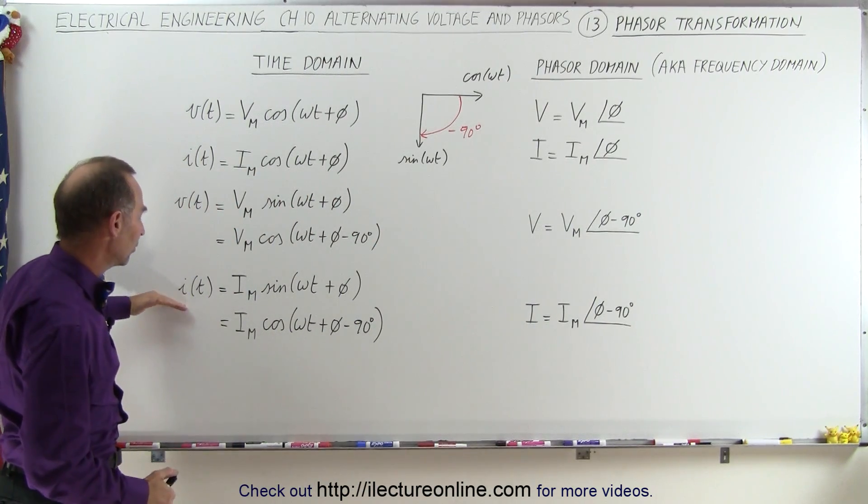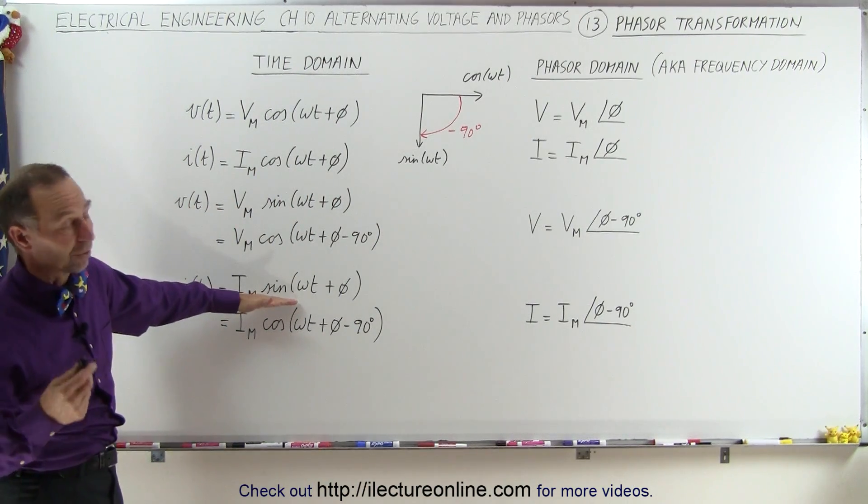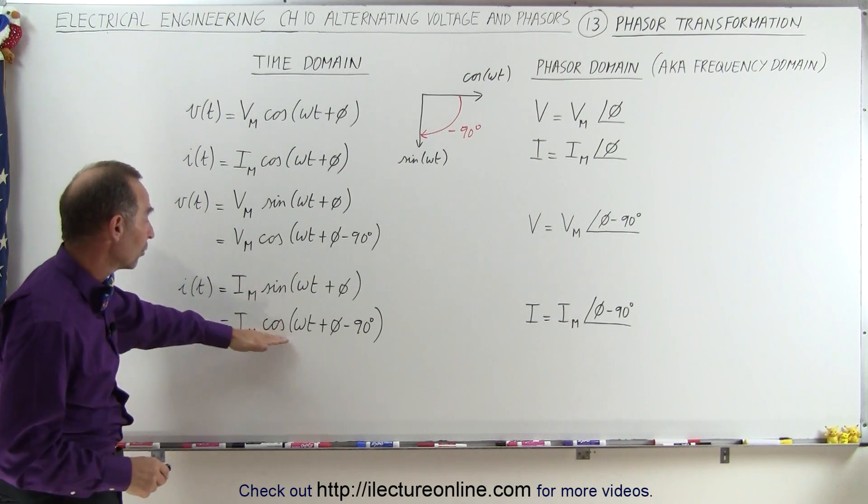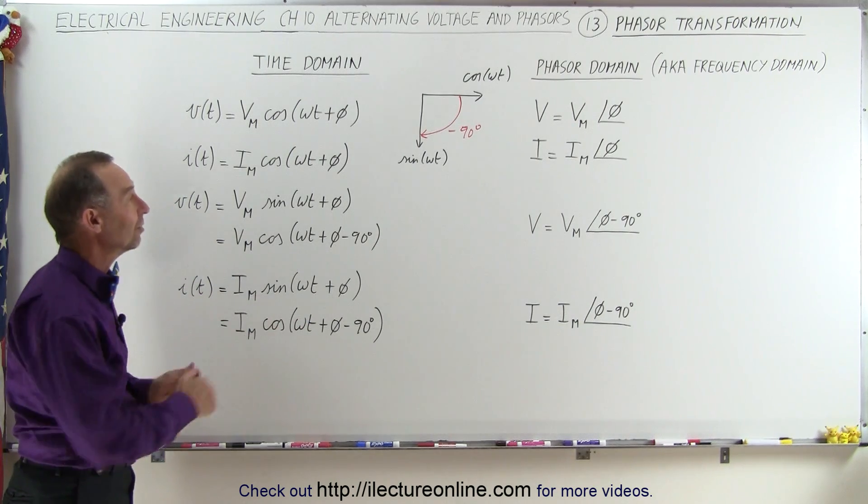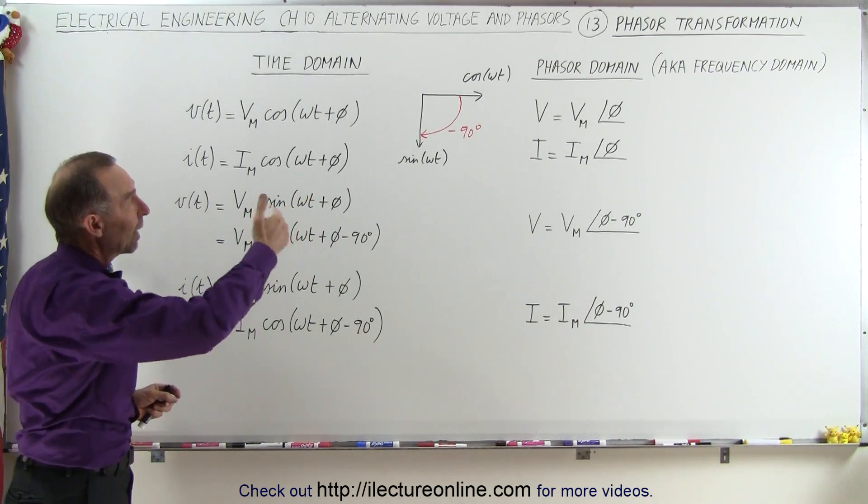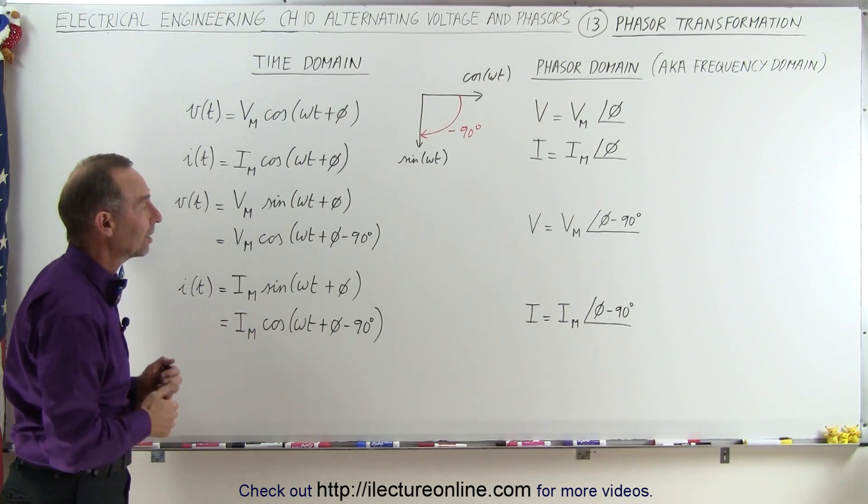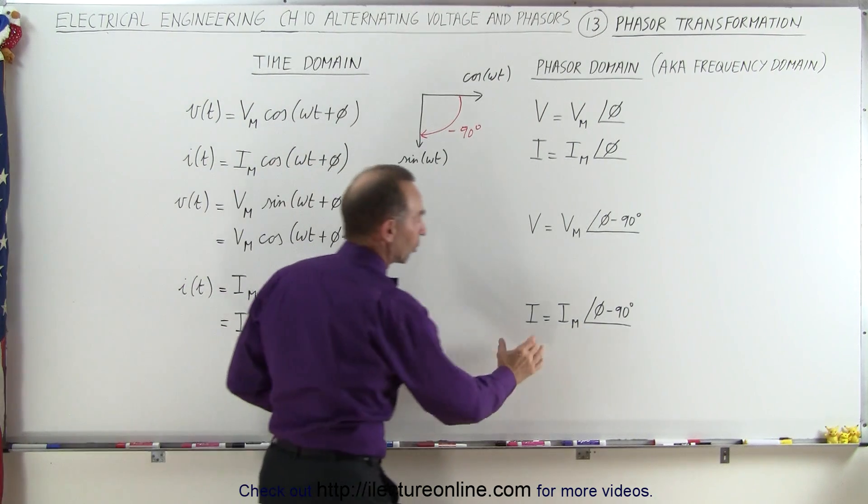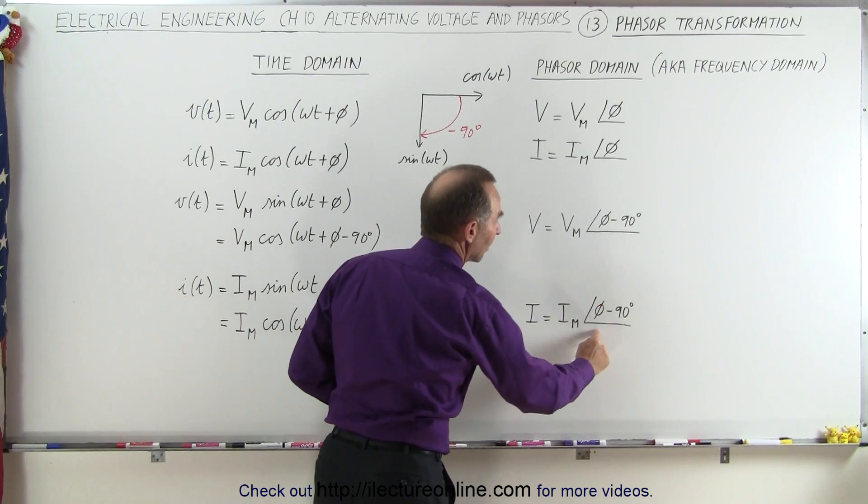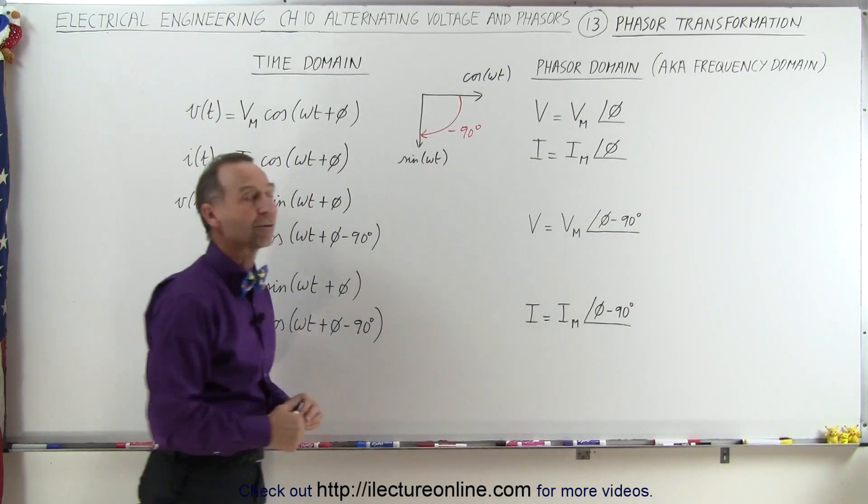And of course, we do exactly the same for the current. If the current is expressed in terms of the sine, then we want to convert it to the cosine again with the minus 90 degrees, because the sine is 90 degrees behind the cosine, so I have to shift it by 90 degrees. And then we express the current in terms of the maximum current times the phase angle of phi minus 90 degrees.